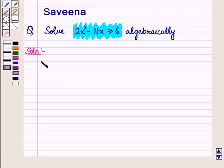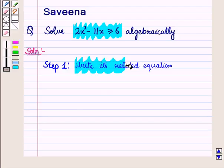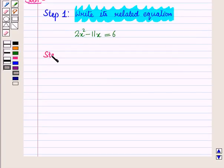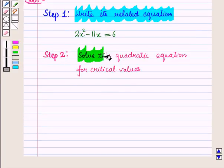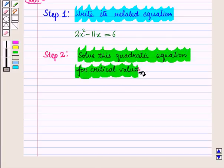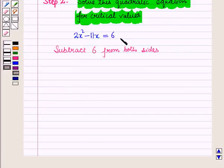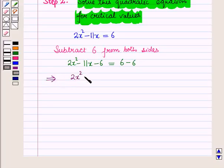To find its solution we follow three steps. In Step 1, we write its related equation: 2x squared minus 11x is equal to 6. In Step 2, we solve this quadratic equation for critical values. Subtracting 6 from both sides gives 2x squared minus 11x minus 6 is equal to 0.